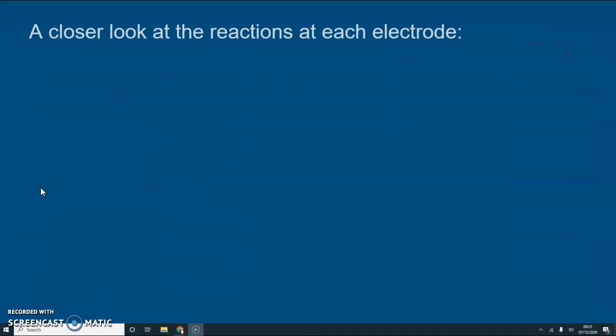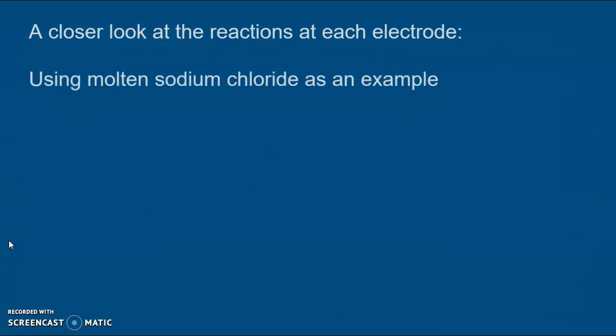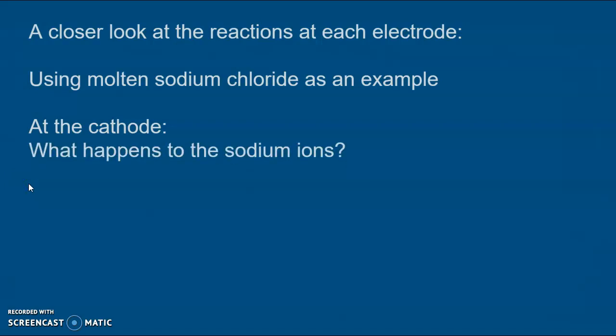Let's take a closer look at what actually happens at each electrode. If you can remember the animation that gave you quite a good look at what goes on, but let's take another look using molten sodium chloride as an example. What happens at the cathode? What happens to the sodium ions? Well we should know that the sodium ions become sodium atoms.